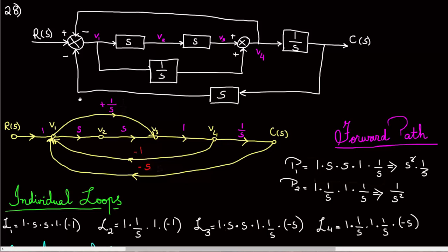Now we start with the feedback loops. At V1 we see there is a 1/S branch going from V1 to V3, so we draw a line from V1 to V3 and label it positive 1/S. Next, at V4 we see a line going back to V1 — it's negative, so we label that negative 1. Then from C(s) there's another loop going back to V1, and that is labeled negative S.